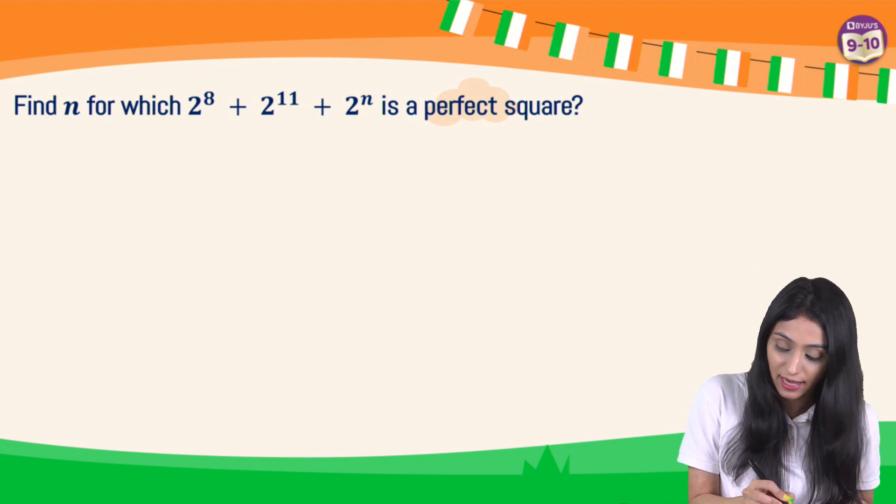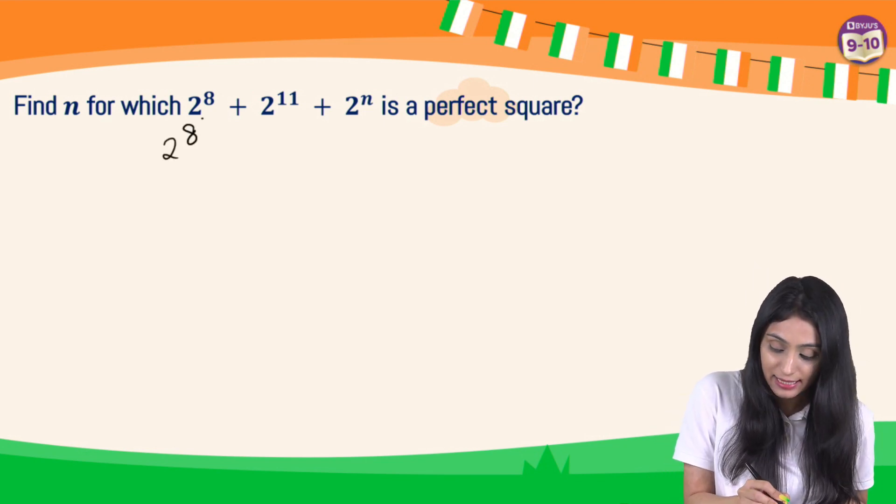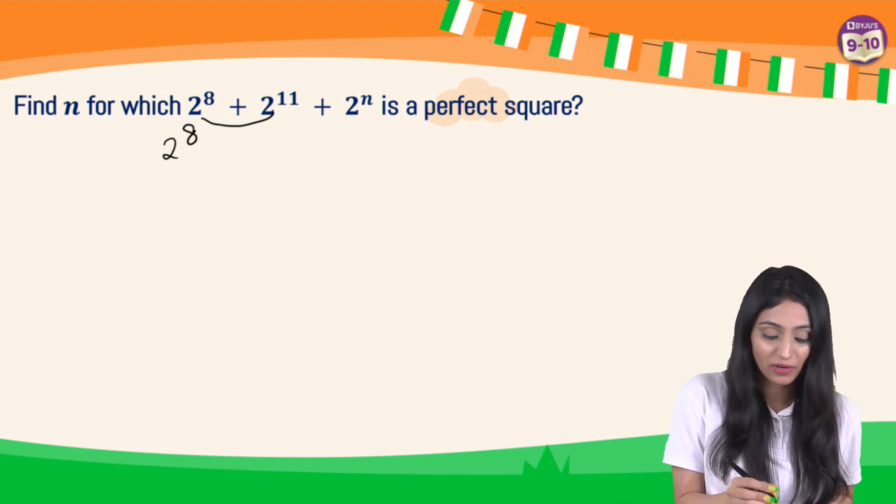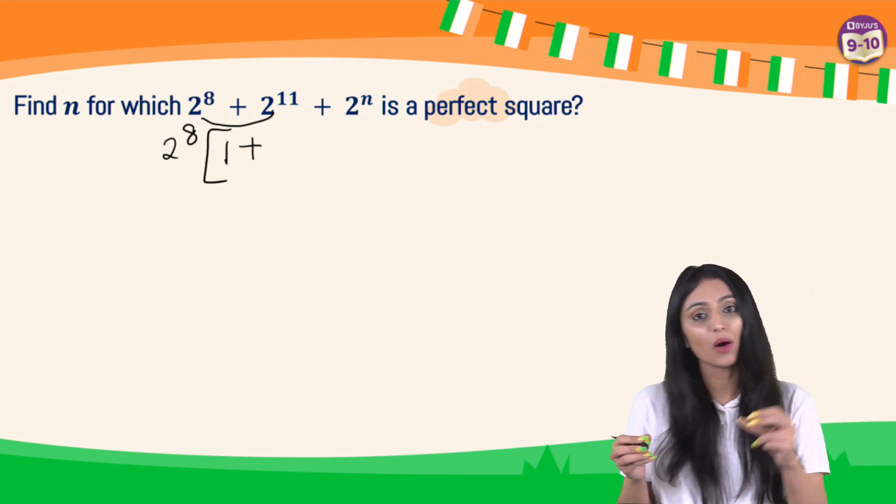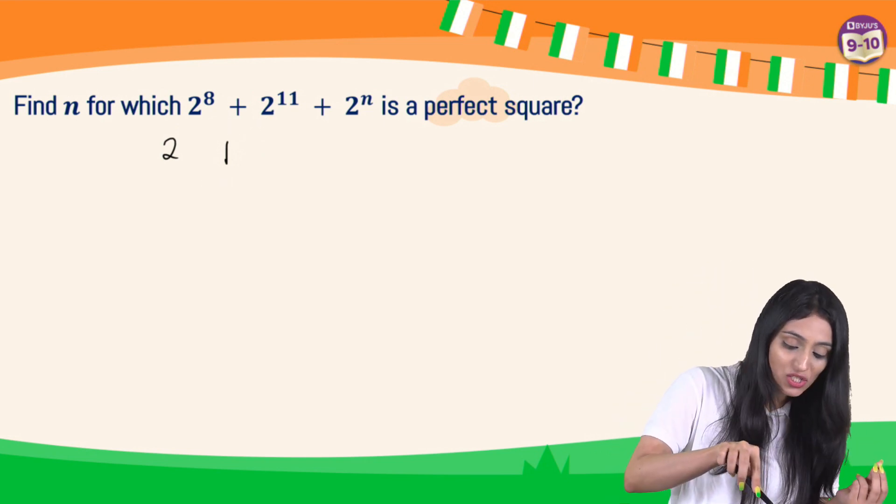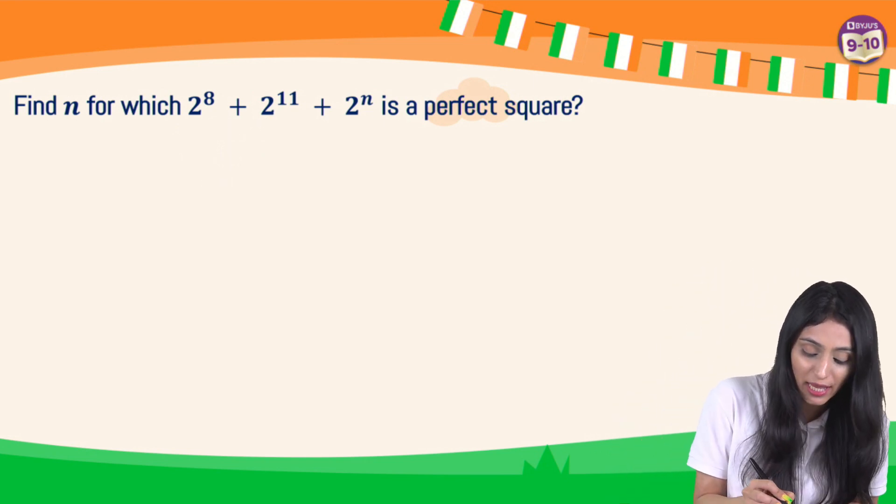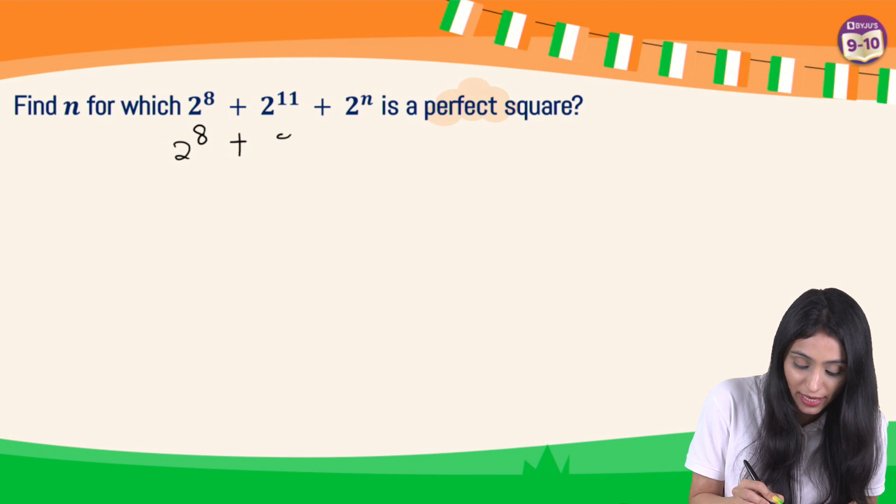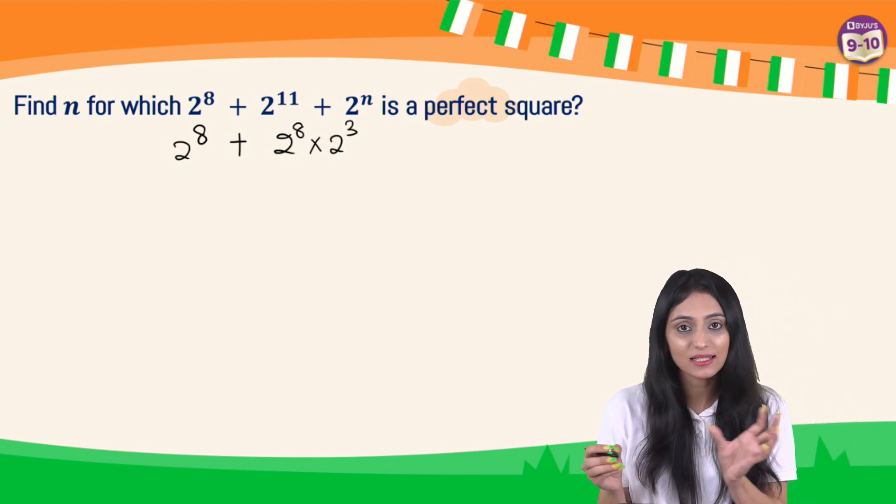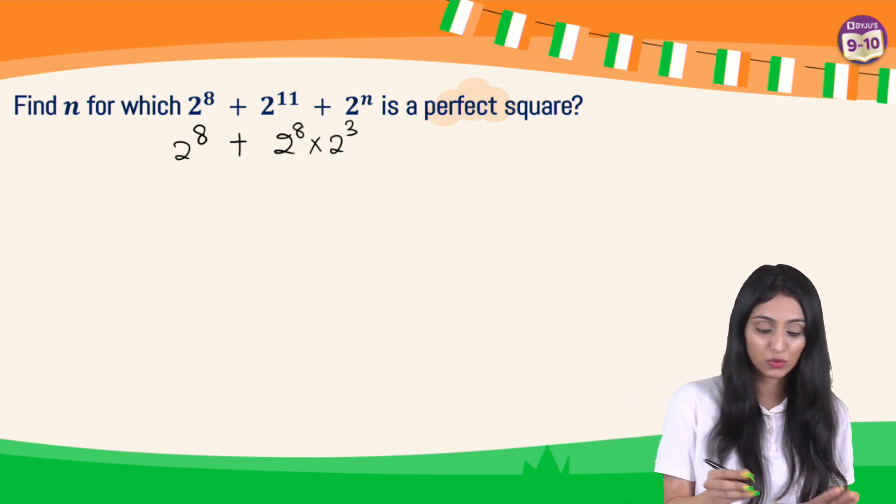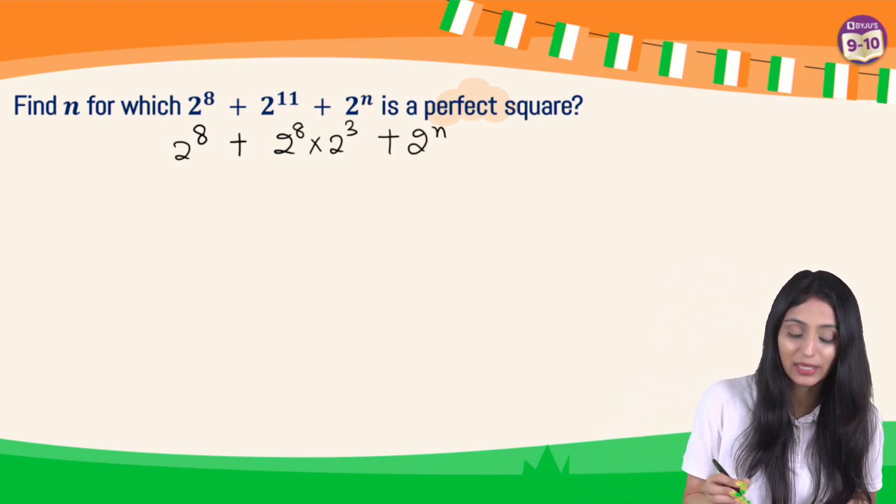Let's see that here we have got 2 to the power 8. Let's try taking common from both of them. I can write this as 2 to the power 8 and this could be written as 2 to the power 8 times 2 to the power 3. When bases are same, powers get added up, still we get 2 to the power 11 plus 2 to the power n.